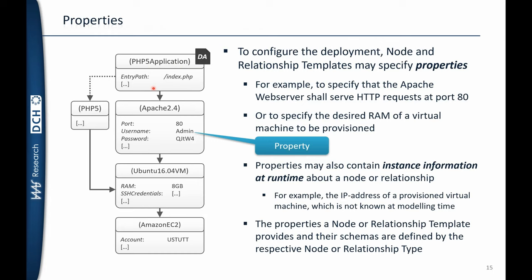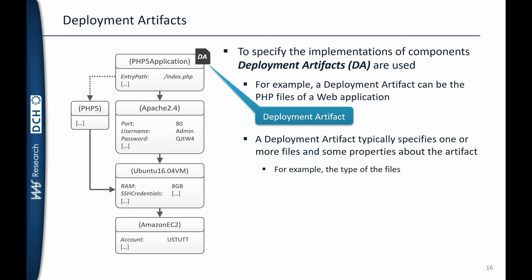The node templates define values for those properties — in this case, the entry path of the PHP 5 application is index.php. Additionally, properties can also hold instance information. For example, the Ubuntu 16.04 VM can define an IP address, which will be filled after deployment with the actual instance IP. TOSCA also defines the concept of deployment artifacts — files that are attached to node templates required to deploy the application. For example, the PHP 5 application has a deployment artifact that may contain all the PHP files required for the application.